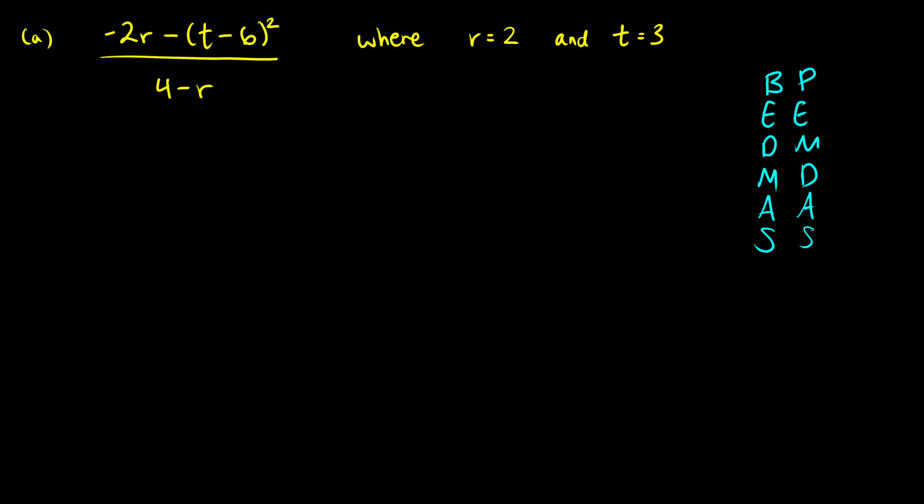So let's do some substitutions here. So we have negative 2r, and here we're saying r is 2. We're going to subtract t minus 6. Well, t is 3, so that's 3 minus 6. That's all squared. And then we have 4 minus r, so that'll be 4 minus 2.